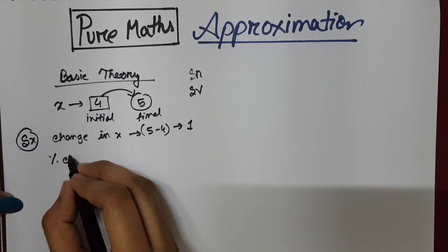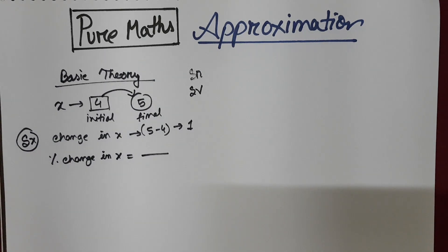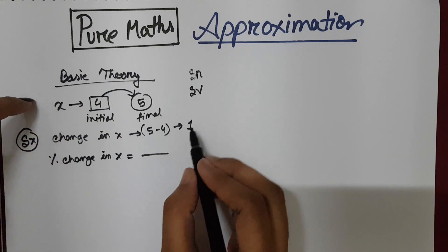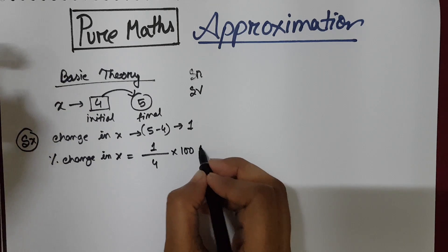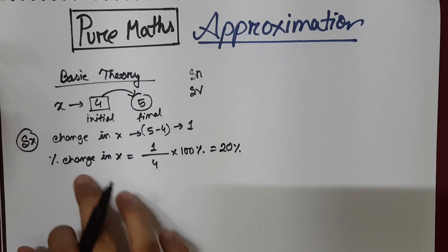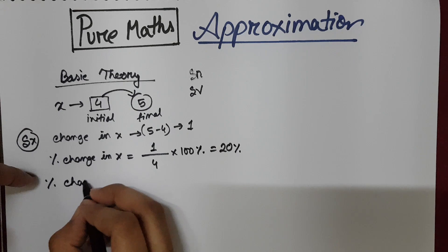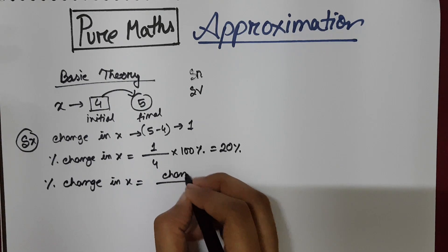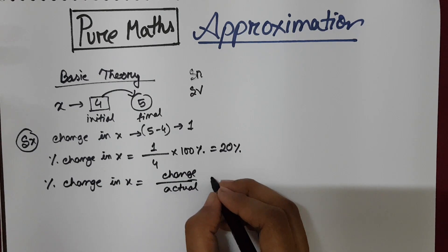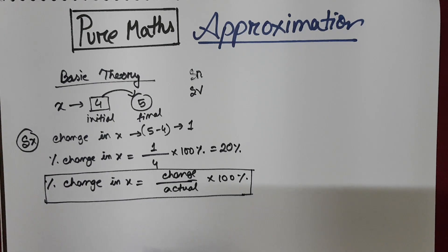If we need to find the percentage change in x, it means we need to find the percentage by which the value of x has changed. For that, we take the change, which is 1, divided by the actual value 4, multiplied by 100 percent — which gives 25 percent. So the formula for percentage change in anything is: divide the change by the actual value and multiply by 100 percent.